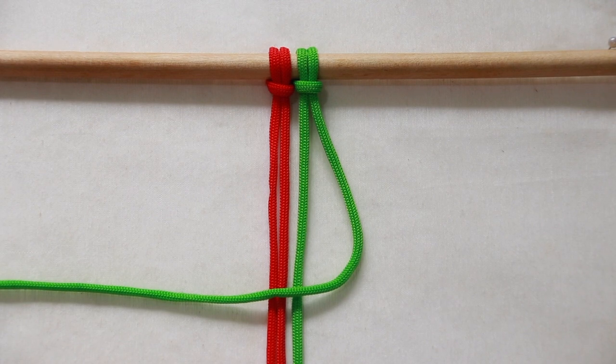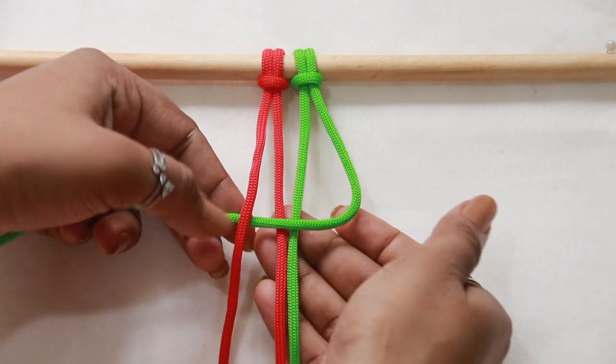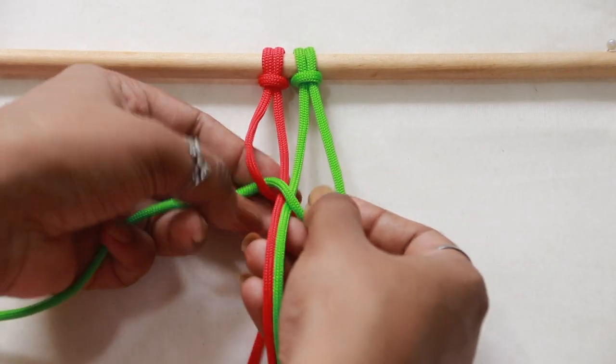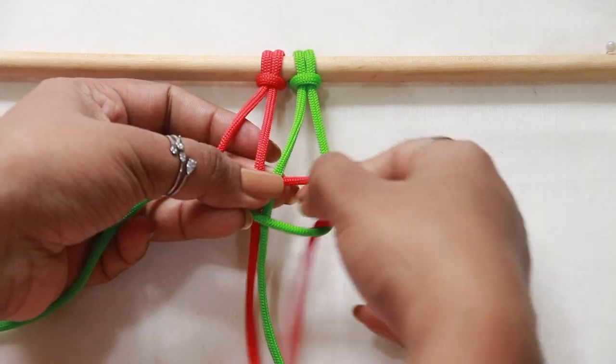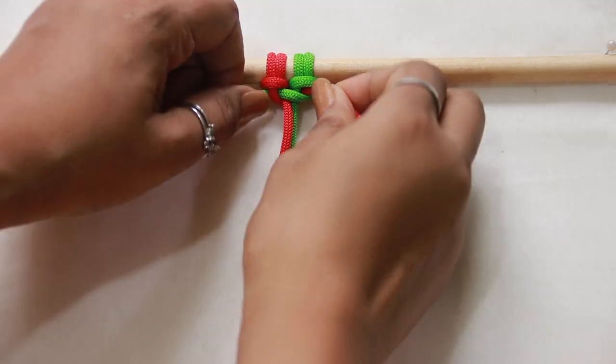Take the left working cord and go over the tail of the four. Pass underneath the two middle filler cords held together, then out through the loop formed on the right side. Pull them up tight and secure together.